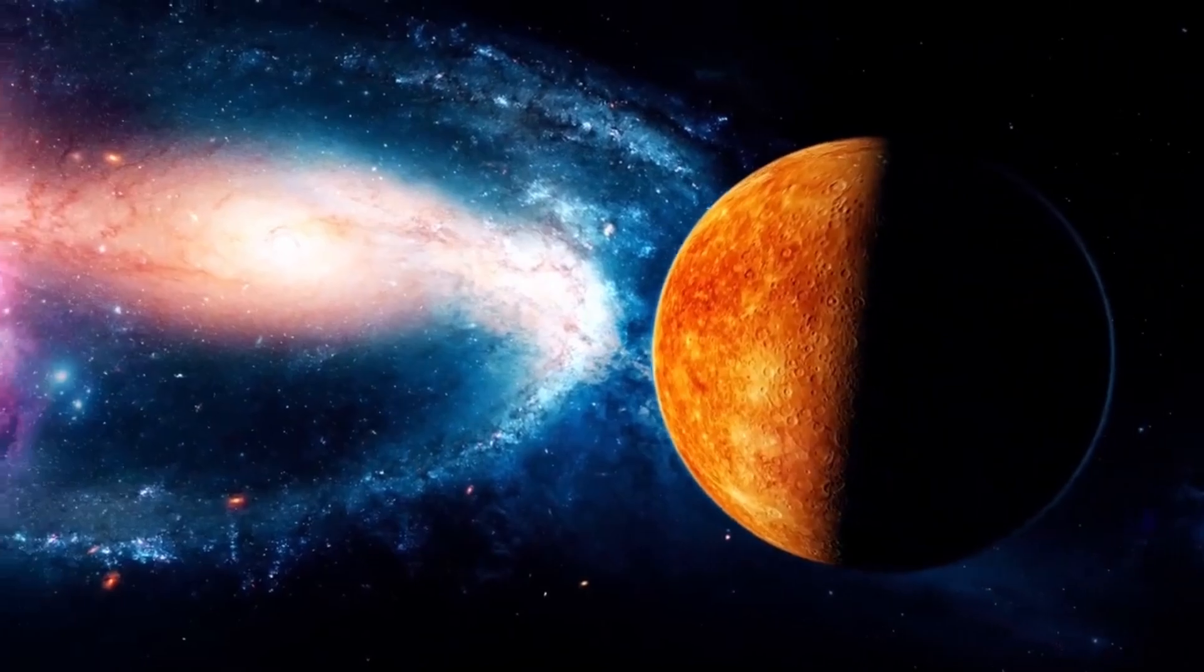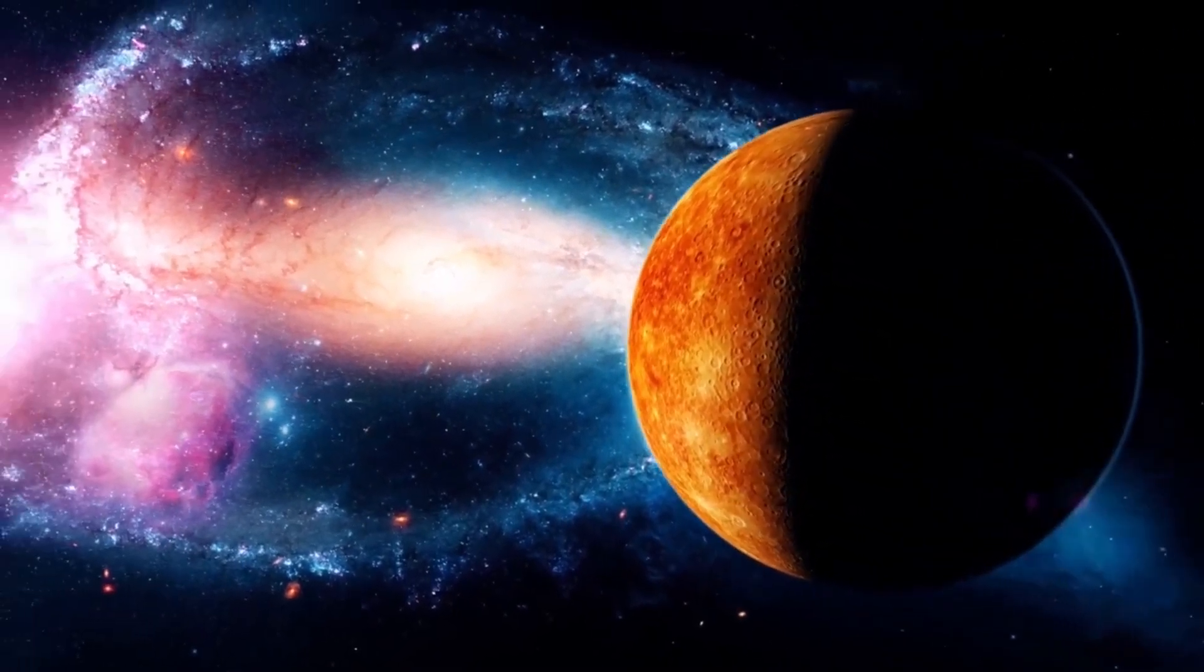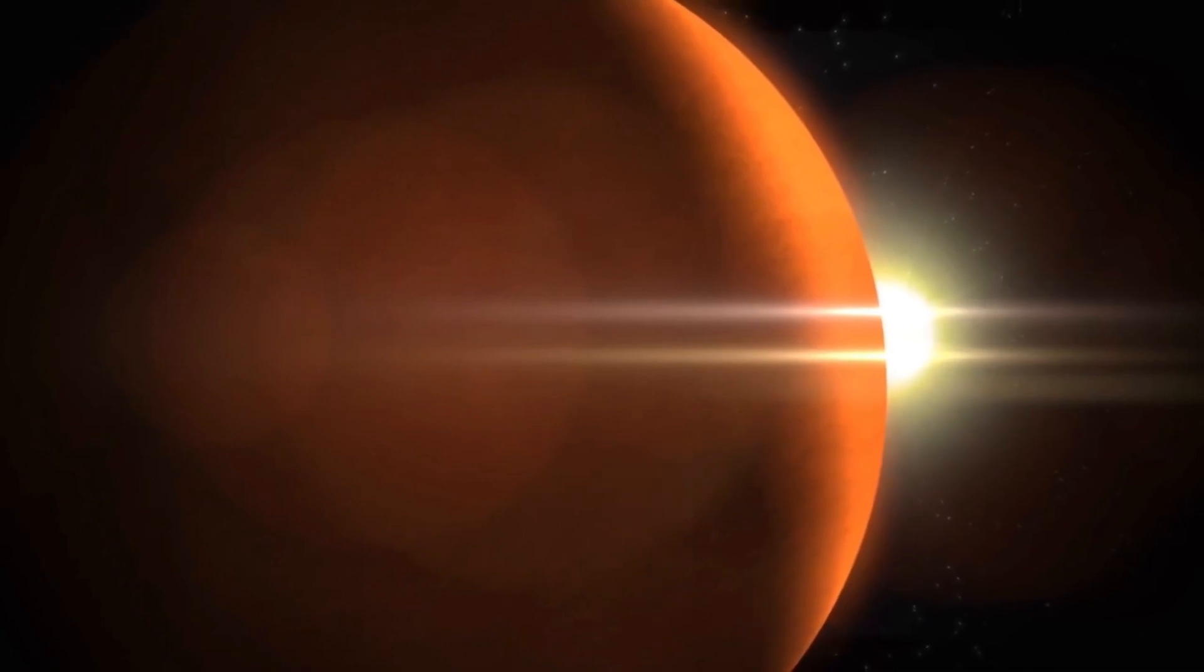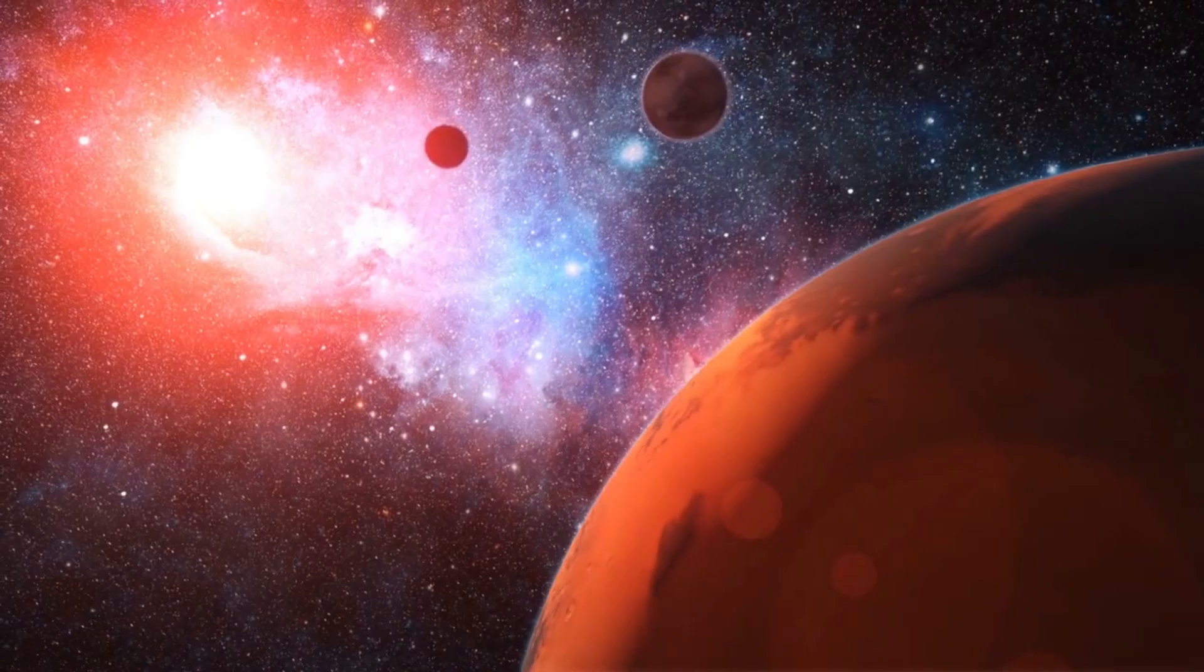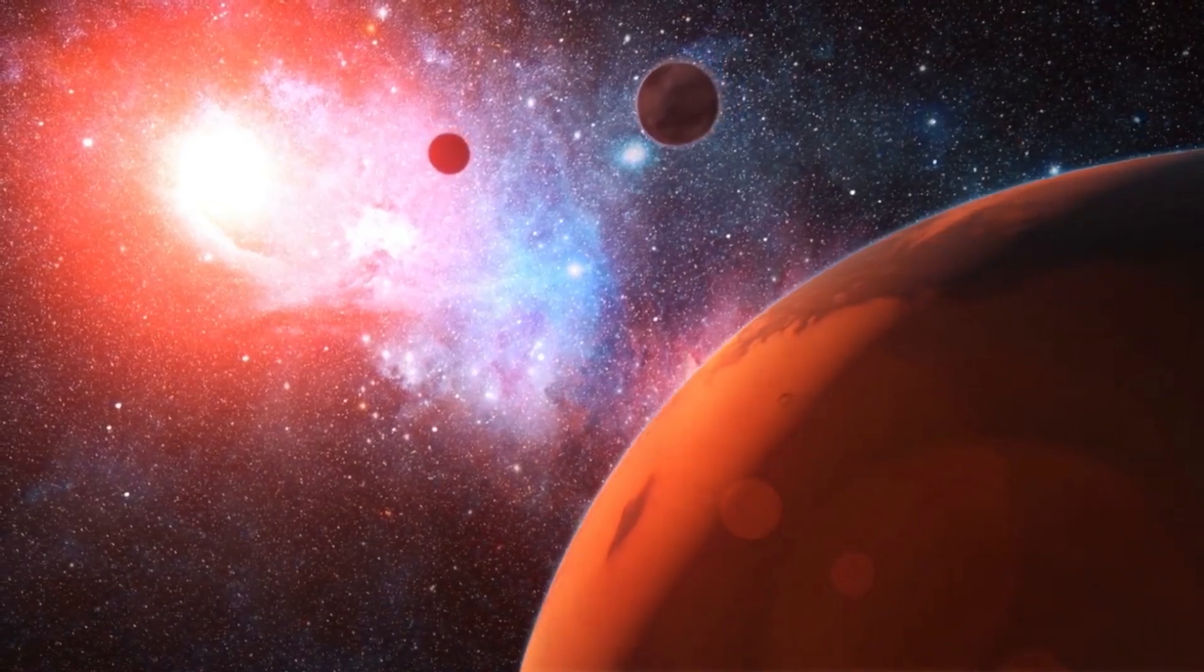What makes it even more interesting is how close it is to its host star. WASP 39b orbits its star at a distance that's eight times closer than Mercury is to the sun. With the help of Webb, we are learning more about this distant and intriguing world.